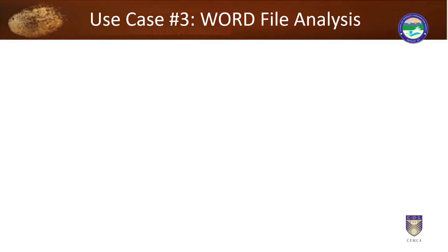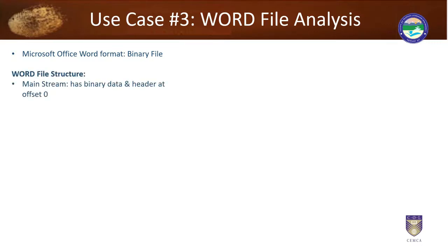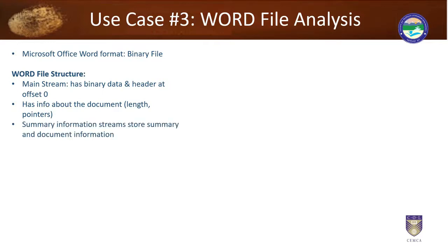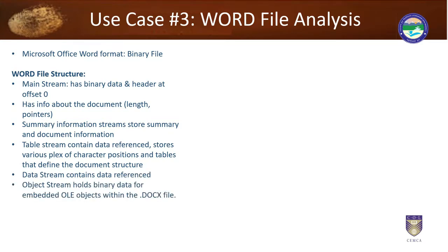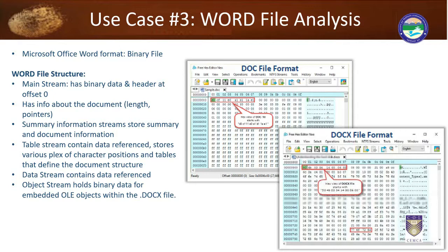Use case three: analyzing a Word document. Word documents are binary files. The structure includes: a mainstream with binary data at a header offset at zero, containing document length and pointers; a summary information stream storing summary and document information; a table stream containing data reference stores, various plex characters, positions, and tables defining the document structure; a data stream containing referenced data; and finally an object stream holding binary data for embedded OLE objects or macros inside the DOCX file.